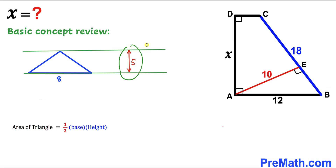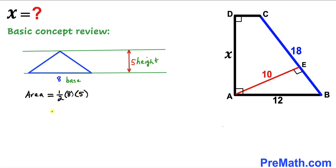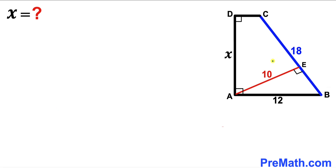Here we have another scenario where the height of this triangle is represented outside the triangle. Still, our base is 8 and our height is 5, and we apply the same area formula. Area equals one half times 8 times 5, which is once again 20 square units. So in both scenarios the area of this blue triangle is the same.